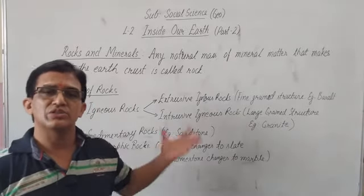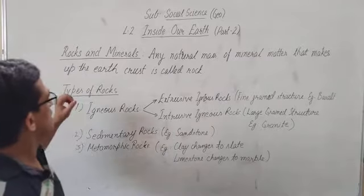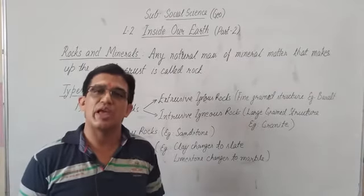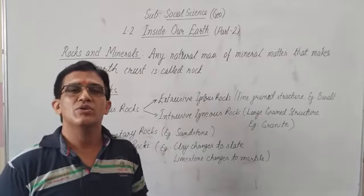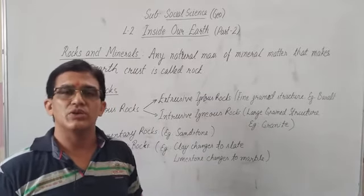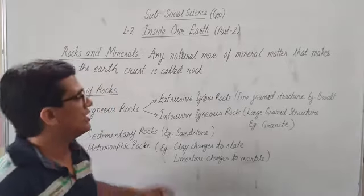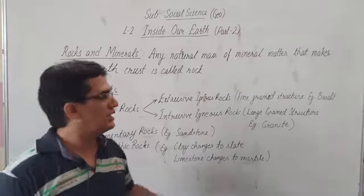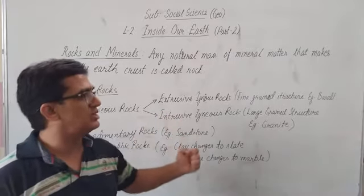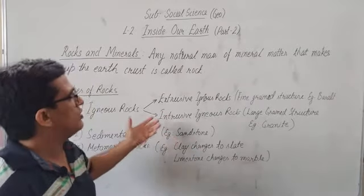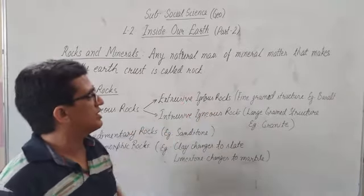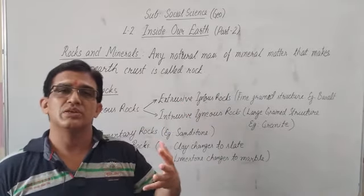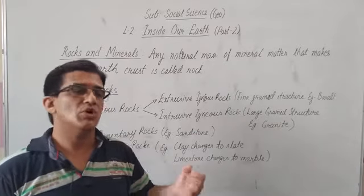First is igneous rocks. Igneous rocks are also called primary rocks. These rocks are formed from volcanic activity. It comes from inside the earth. When the rocks come out and solidify very quickly, then it becomes extrusive igneous rocks. Extrusive means external, and this has very fine grain structure. One example is basalt.